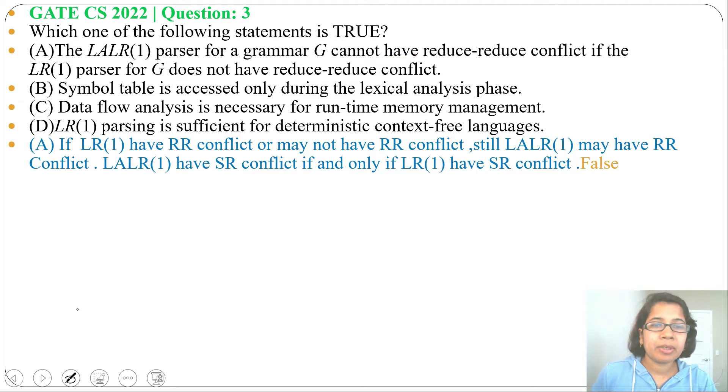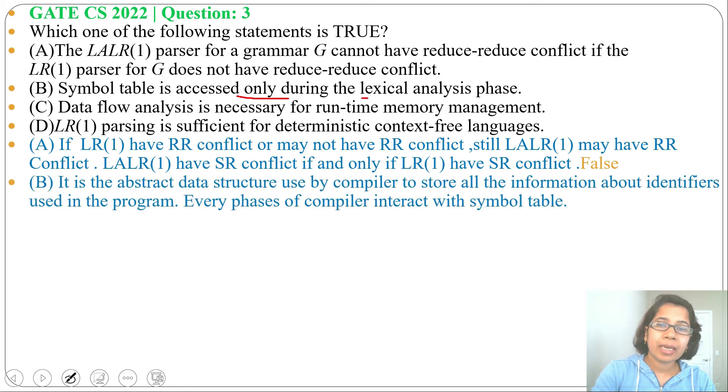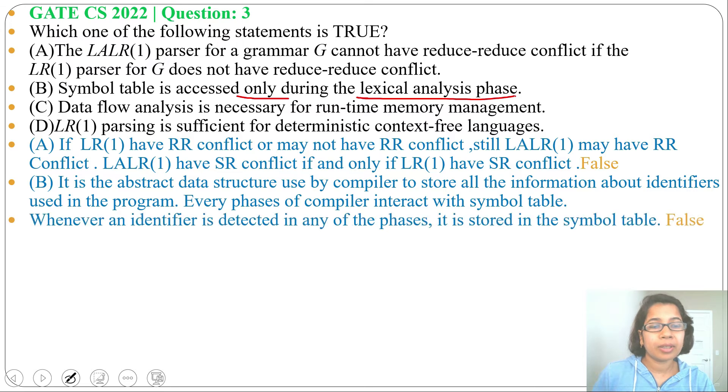Option B: Symbol table is accessed only during the lexical analysis phase. This is false. The symbol table is a data structure for storing identifiers by the compiler. It can be accessed by all phases of the compiler, not only during lexical analysis. Since it says 'only,' this is false.